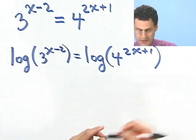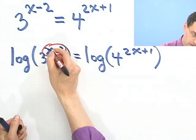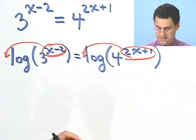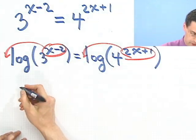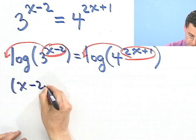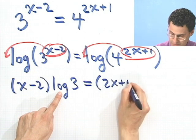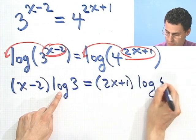Well now I can use this fantastic property of logarithms, which is crucial, that exponents can be written out in front as coefficients. And that saves us. Because now I can write this as x minus 2 times log of 3. Log of 3 is just some number.